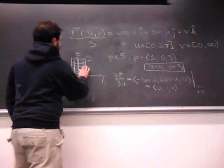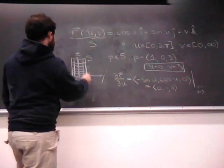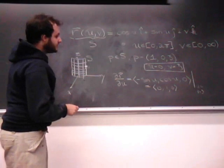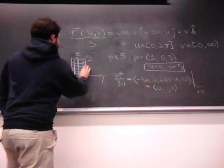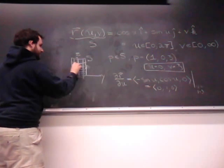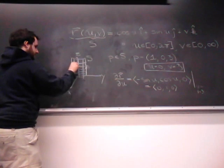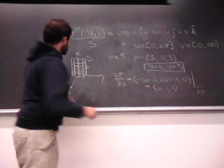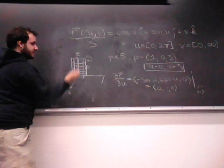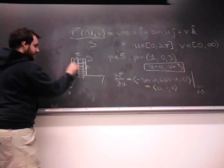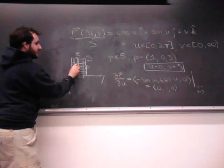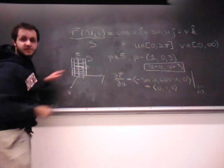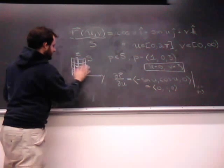So, what does that vector look like at the point P? So, that means the vector that goes in the direction 0 in the x direction, 1 in the y direction, 0 in the z direction. So, this is our first tangent vector to the surface. Let me draw it here.